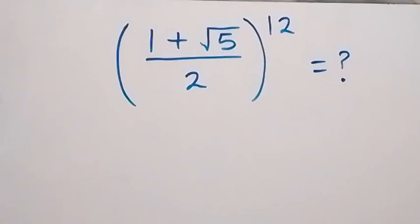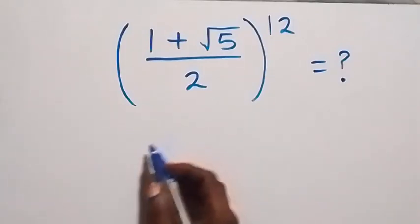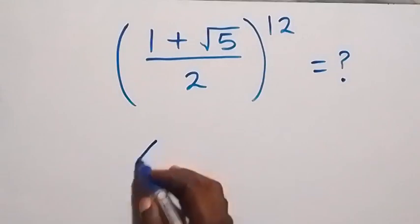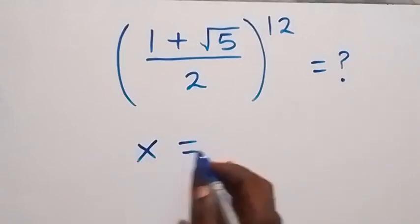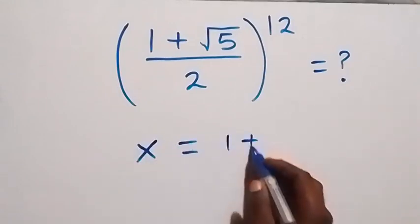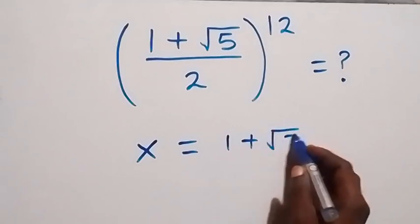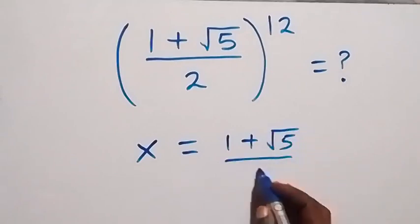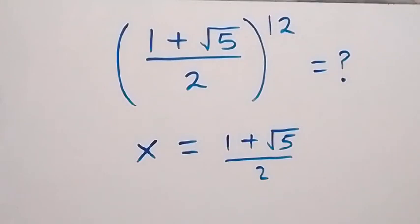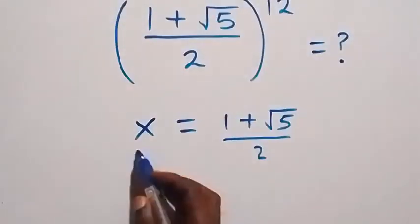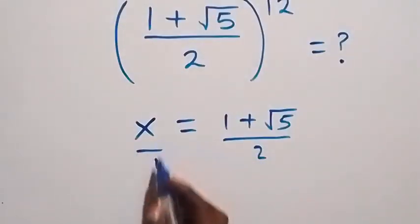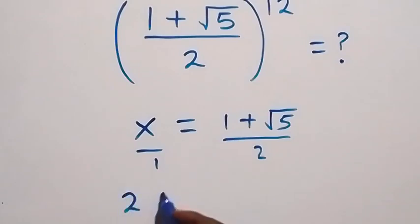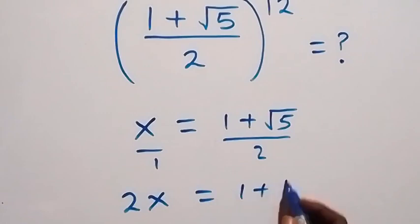Hello, you are welcome. How to solve this nice math problem involving square root and power. We let a letter represent what is inside. Let x be equal to 1 plus root 5 over 2. Then from here we can cross multiply and we have 2x equals to 1 plus root 5.